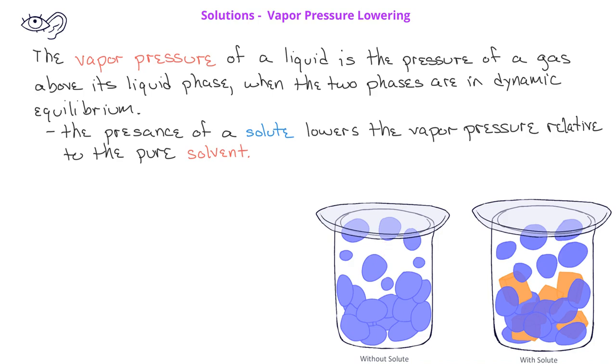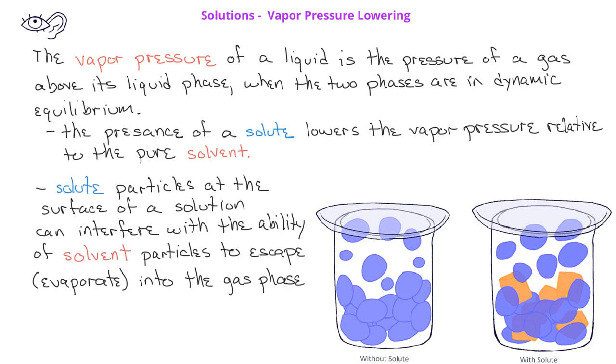Since this takes place at the surface of the liquid, if solute particles are present, some of the surface will be occupied by solute particles. This will decrease the chances that solvent particles on the surface will be able to escape into the gas phase.